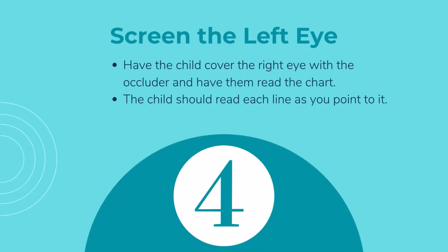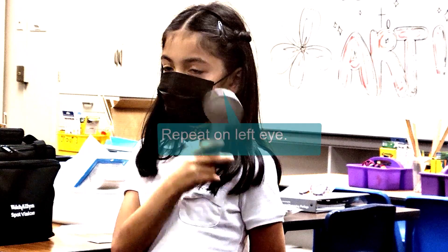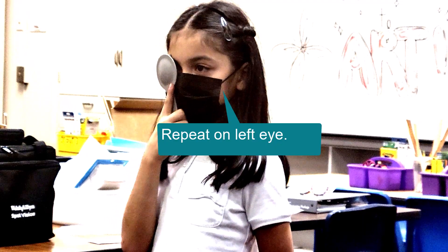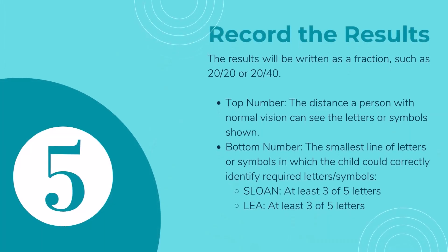Repeat the same process on the left eye. For a Sloan letters chart, record the last line where the child identified three of the five letters correctly. For the LEA symbols chart, record the last line where the child identified three of the five optotypes correctly. This number will be recorded as a fraction with the chart distance as the top number, so 20/20 or 10/10.